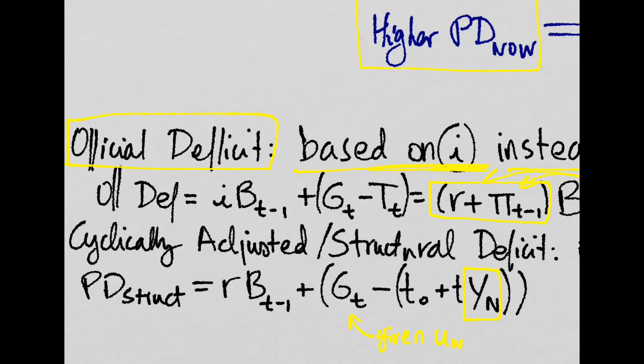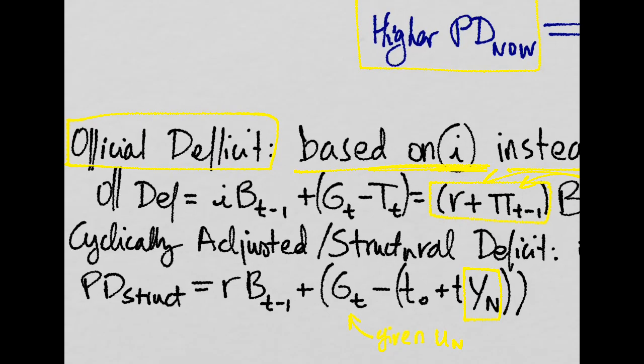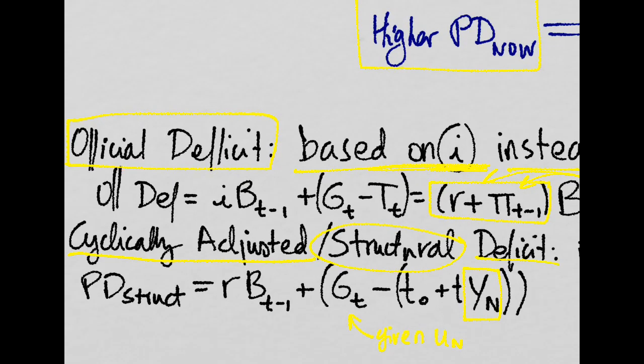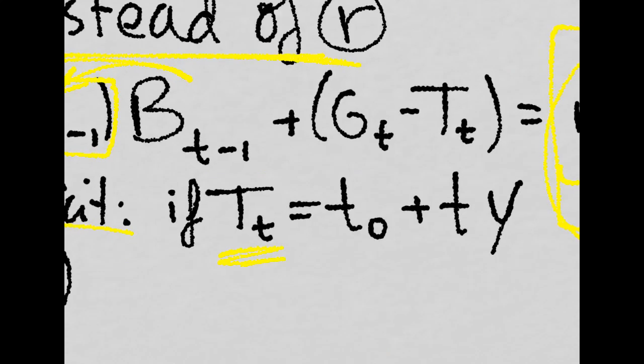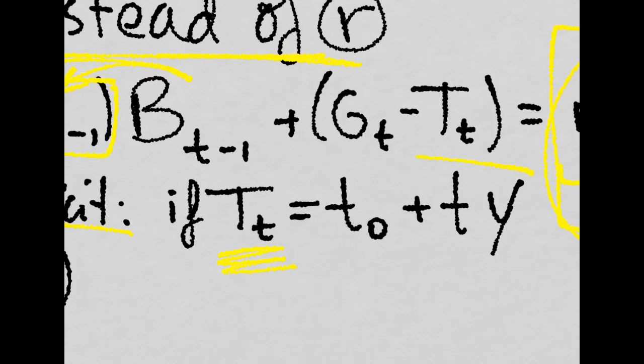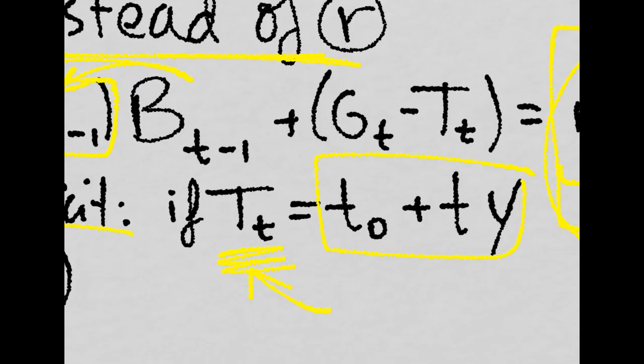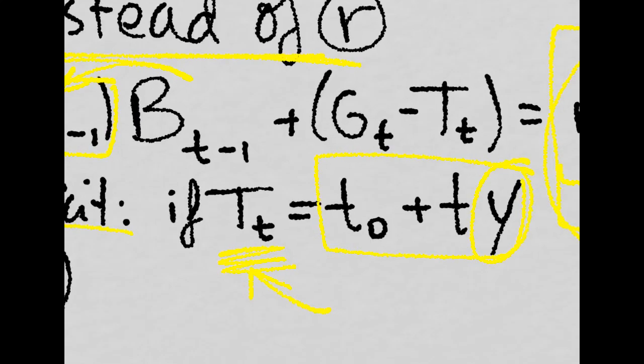If we wanted to take care about the fluctuations in the business cycle, and we just want to know the cyclically adjusted or structural deficit, then we need to make tax revenues endogenous. We're using this form. Because remember, taxes depend on national income, that is, GDP.